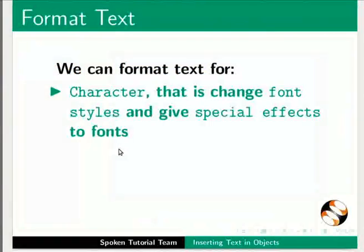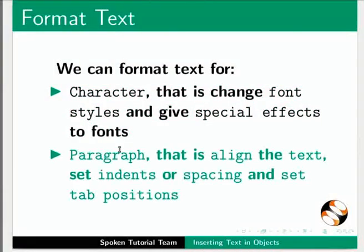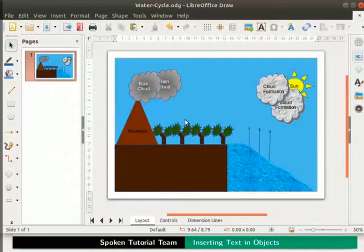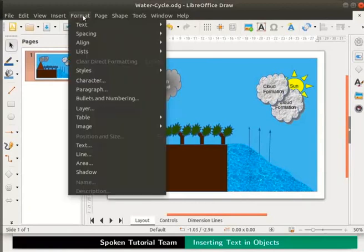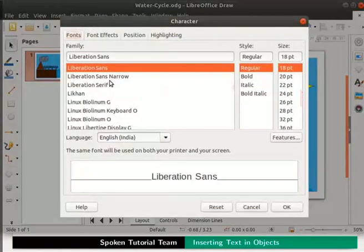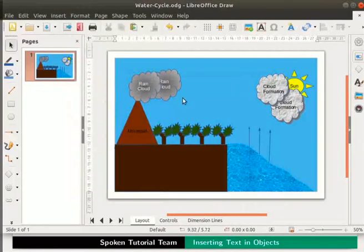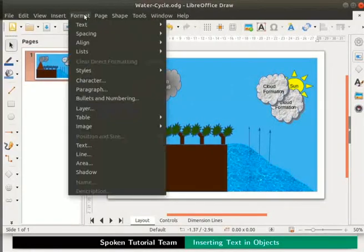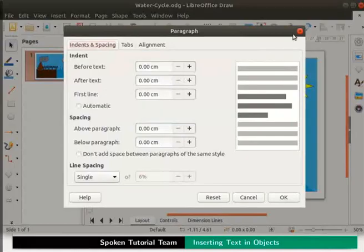We can format the text for character — changing font styles and giving special effects to fonts — and for paragraph, i.e. align the text, set indents or spacing, and set tab positions. We can access these dialog boxes either from the context menu or from the main menu. In the main menu, go to Format then select Character to open the character dialog box. Go to the Format menu again, then select Paragraph to open the paragraph dialog box.